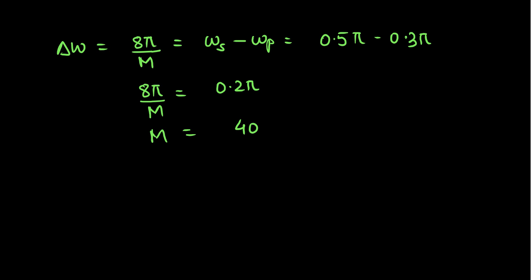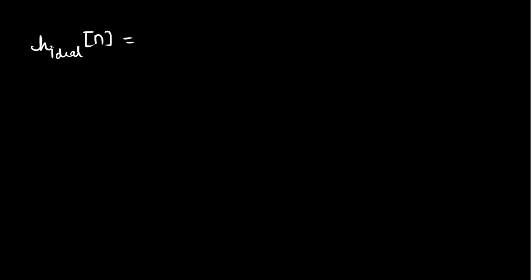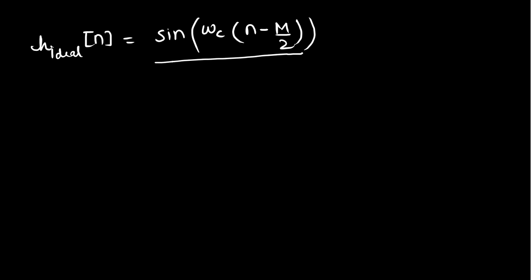Since we are designing a low pass filter, we first design an ideal low pass filter and shift it by M/2 to ensure causality. The ideal causal filter is given as H_ideal(n) = sin(omega_C * (n - M/2)) divided by (n - M/2), valid for n not equal to M/2.